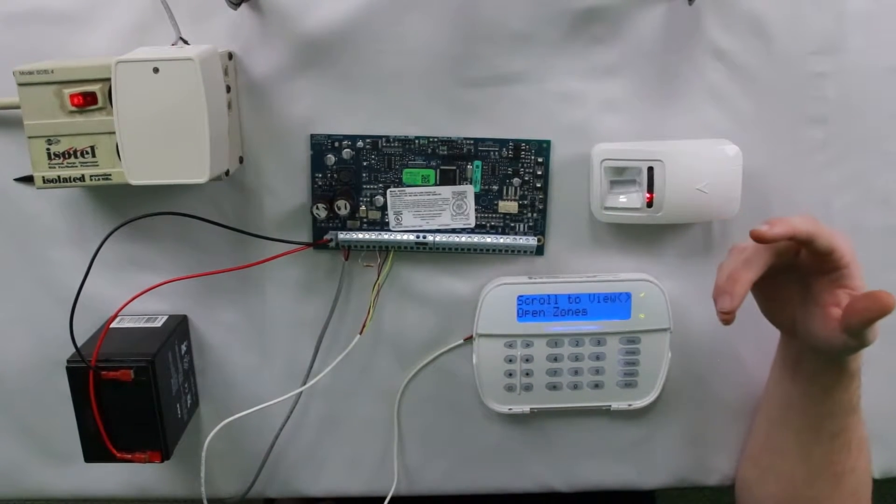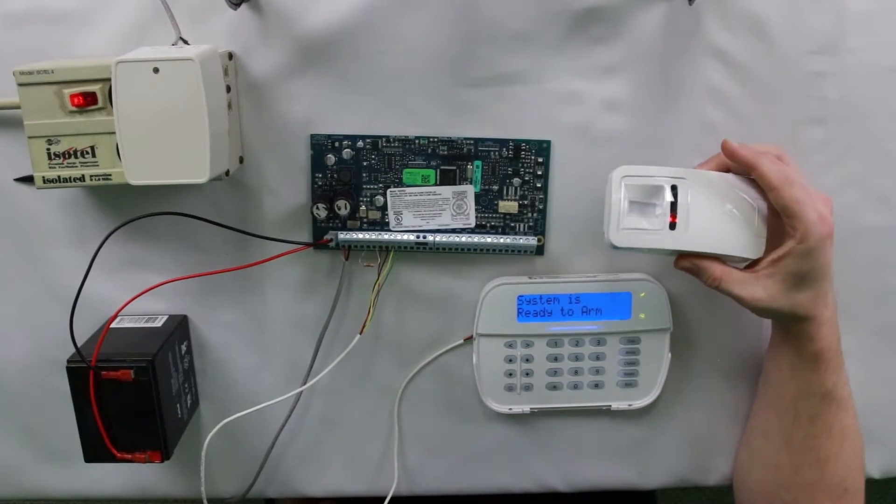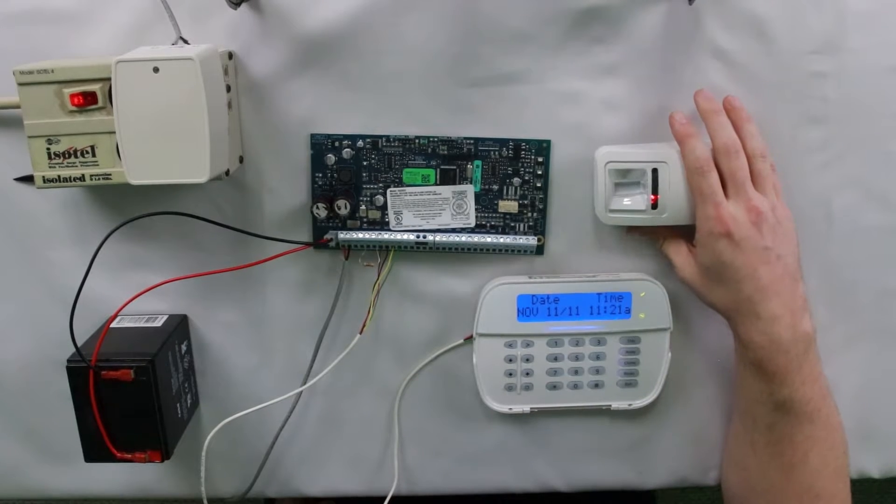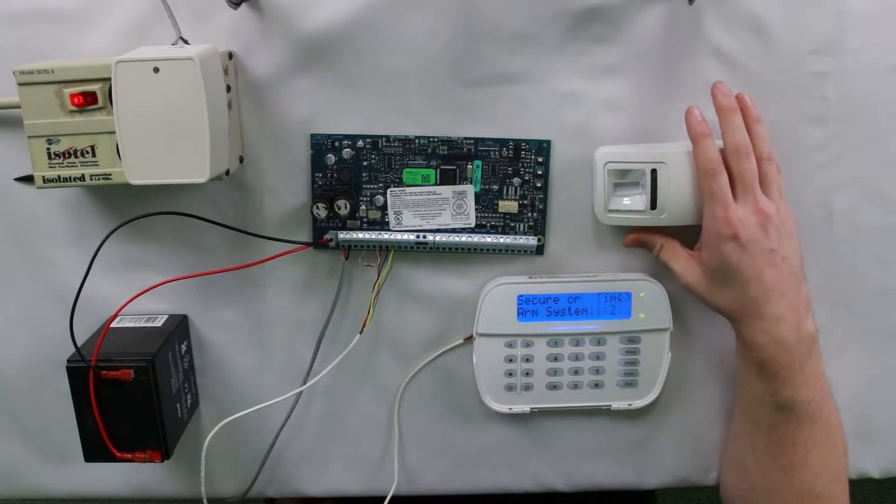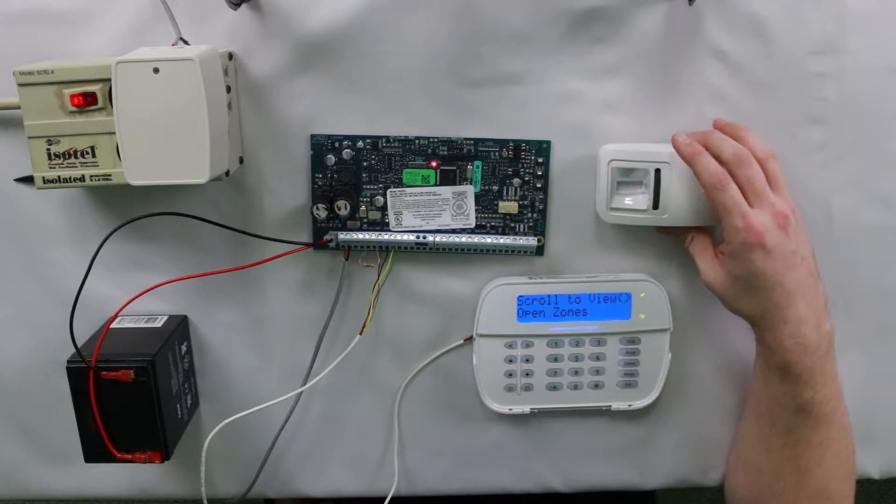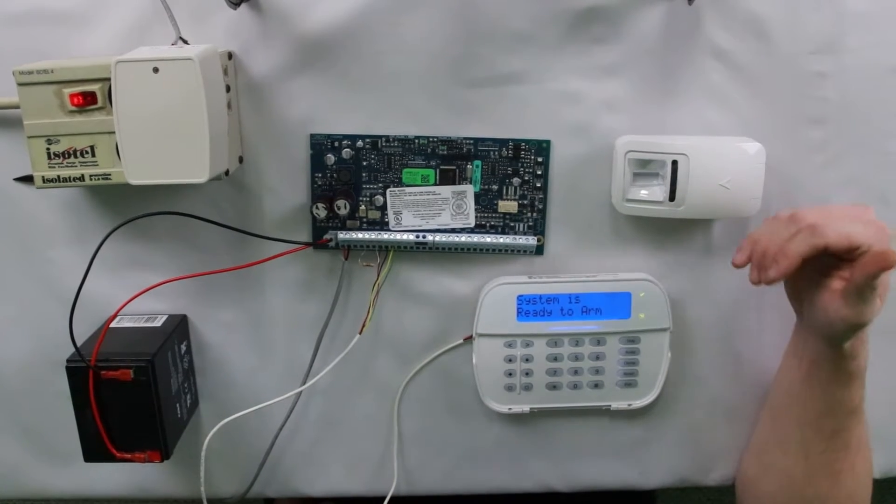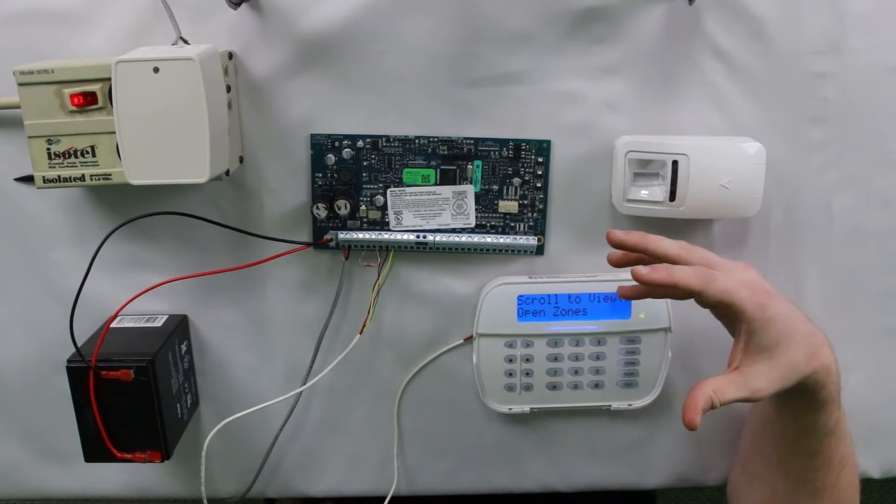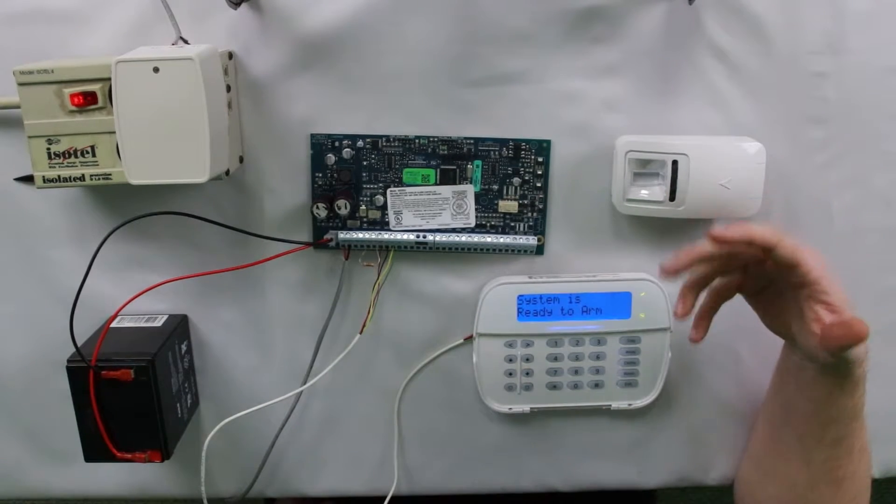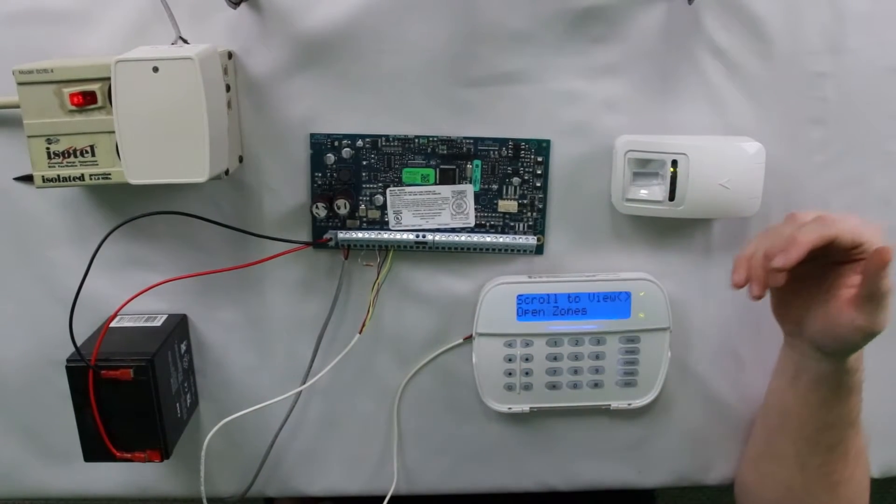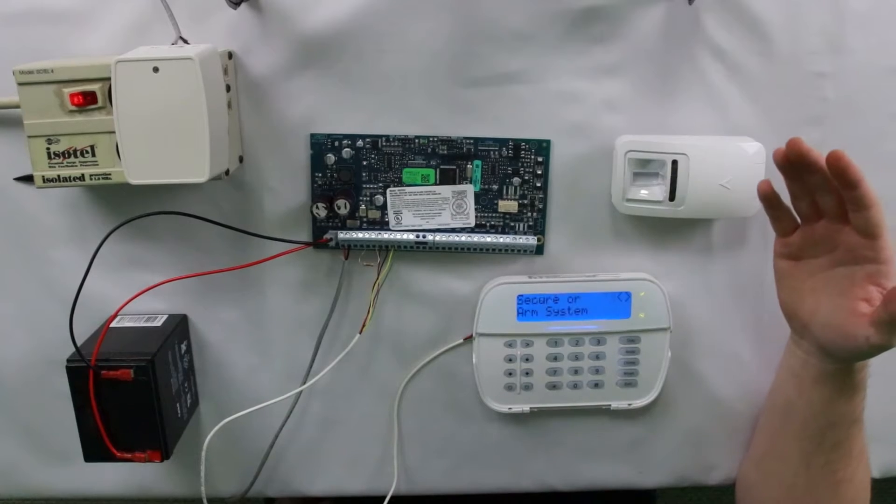A lot of times this trouble happens because you have multiple sensors that have low batteries at once, or if you swap the batteries in the sensors too quickly, sometimes the trouble will get stuck as well. Basically, if you swap the batteries too quickly, the sensor itself doesn't have time to send the signals to the panel quickly enough so that it can pick everything up that's happened.